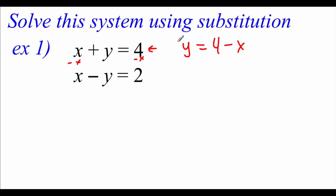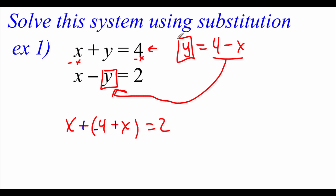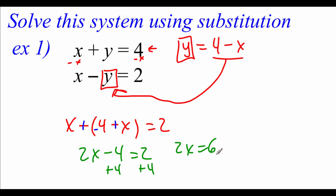We've got y equals, so in our second equation where that y variable is, we're going to replace that y with 4 minus x. So our second equation says x minus (4 minus x) equals 2. Distributing this negative through the parentheses and combining like terms: x plus x is 2x, and then we've got minus 4 equals 2. Adding 4 to the right-hand side gives 2x equals 6, and dividing both sides by 2 gives x equals 3.